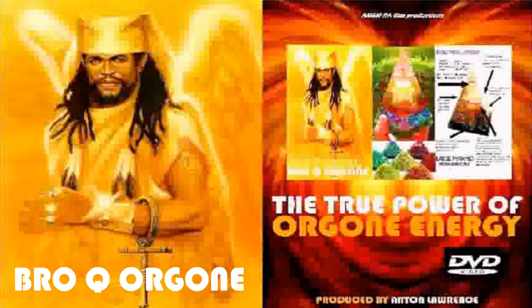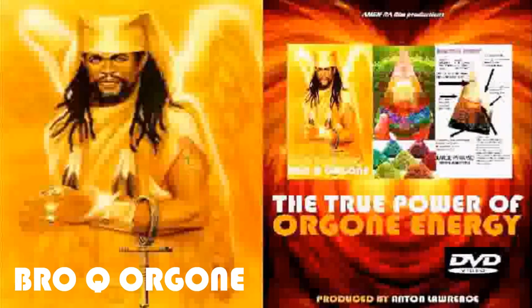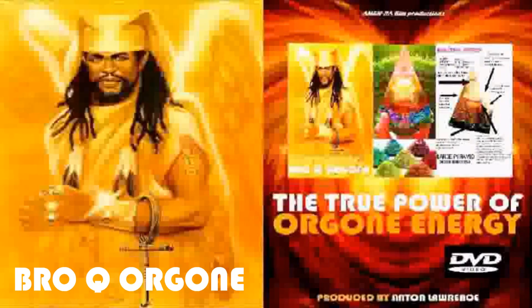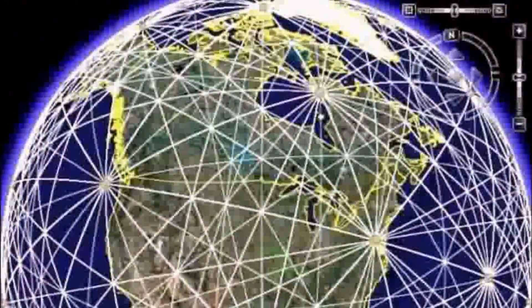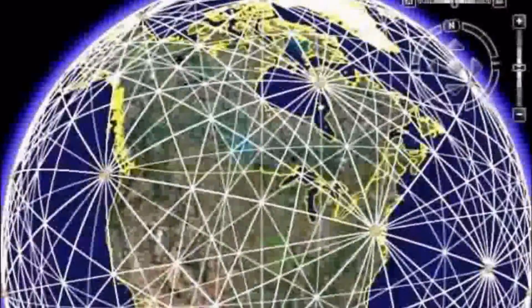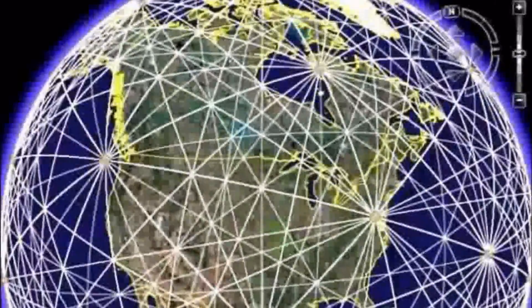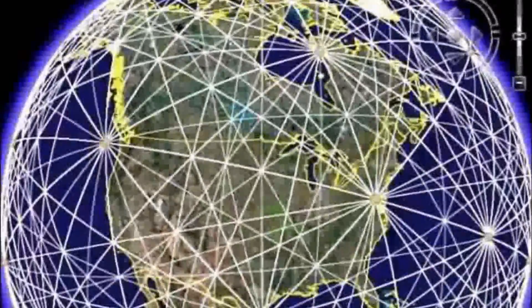Some people use it for meditation purposes, just general well-being. It transmutes energy from computers, cell phone towers. If you live under power lines and things of that nature... Just as a lot of people understand that we live on a planet, and the planet has what you call ley lines, which is basically a grid, an energy grid that goes across the face of the planet. It engulfs the planet, in fact.